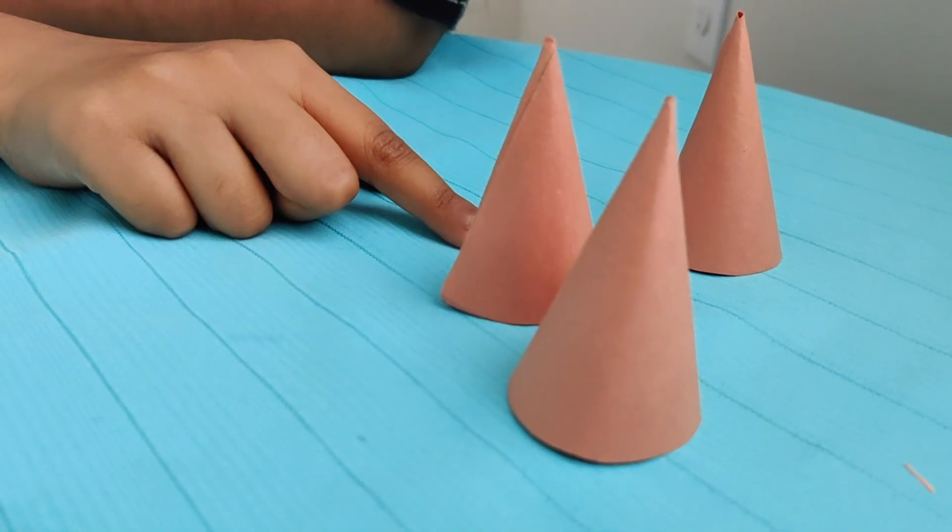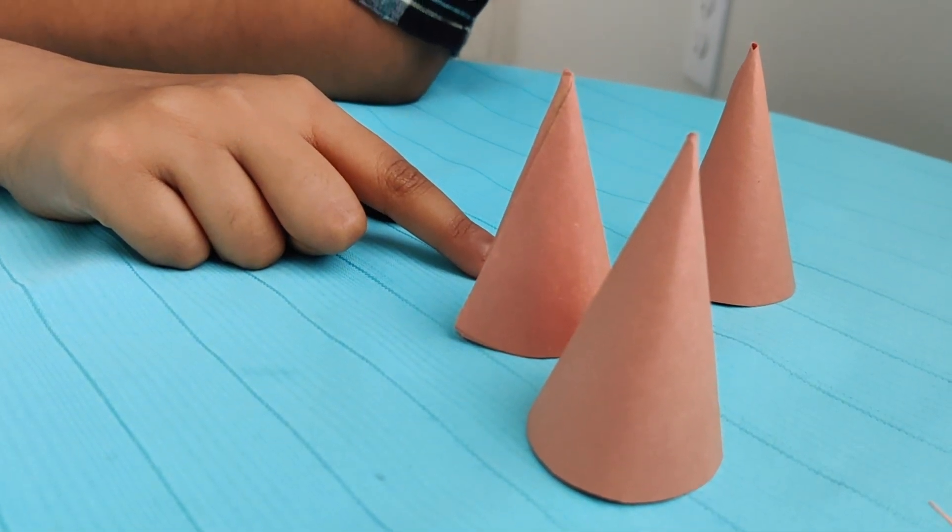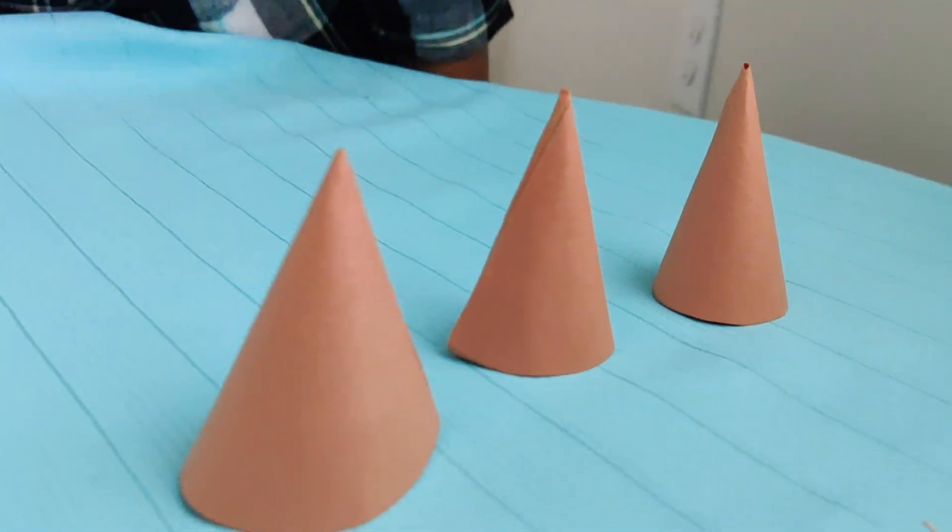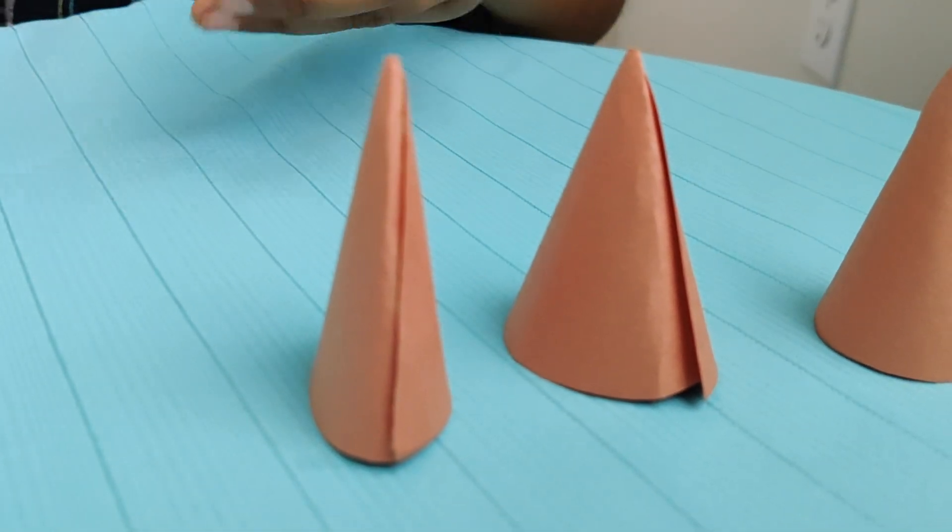You need three of these ice cream shape cones, all the same size. And now, make slits on all the three like this.